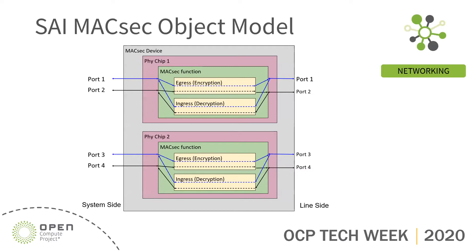At a very high level, you have an egress path — from the system side or switch side to the line side, which is the optical module or cable. Left to right is egress, with an encryption function going from system side to line side. In the other direction, you're decrypting packets as they go from the line side to the system side. The object model was defined such that a device could actually have several chips or die inside.